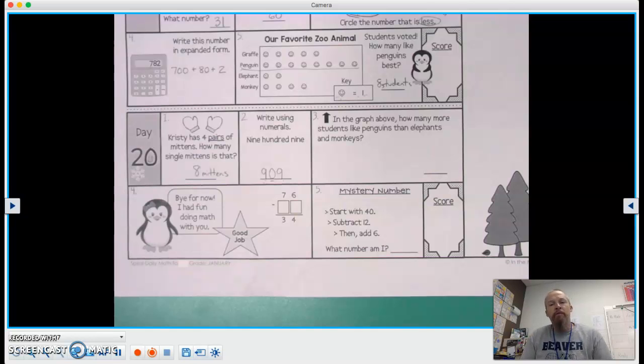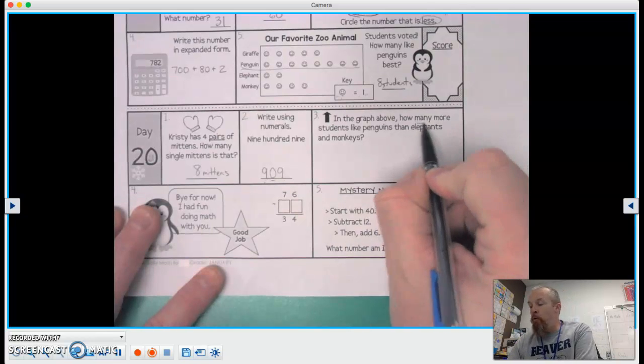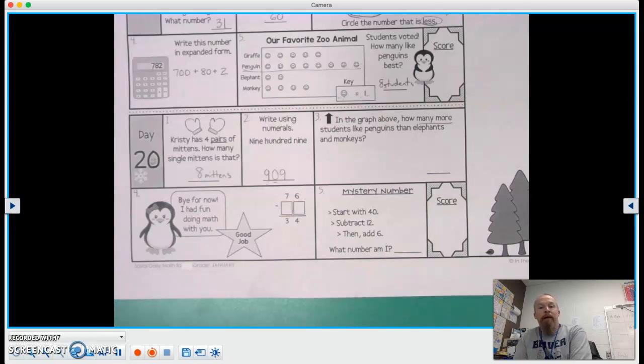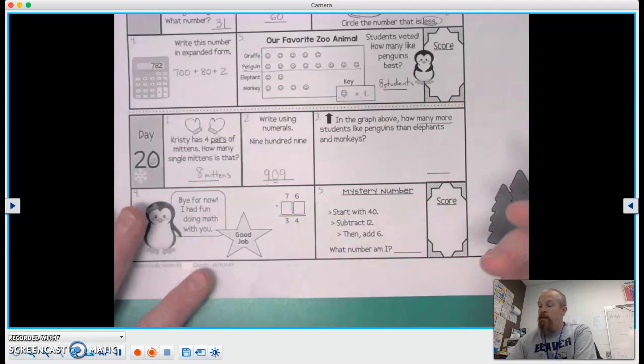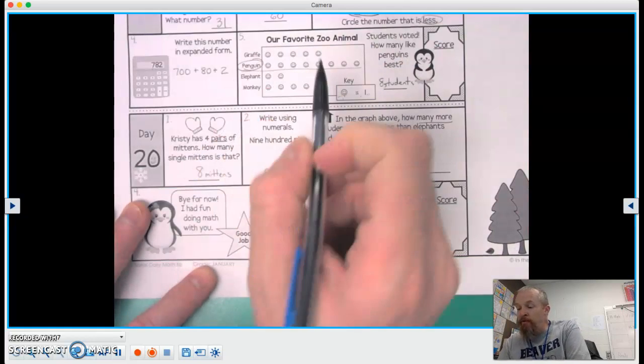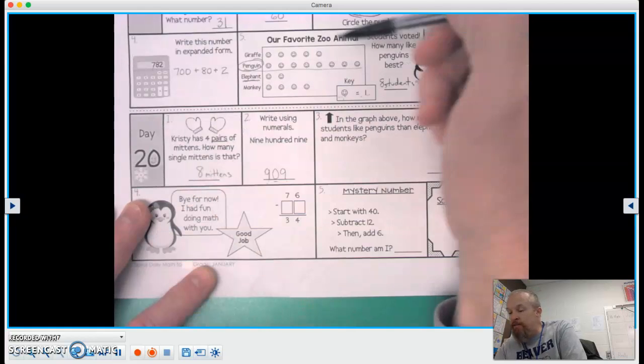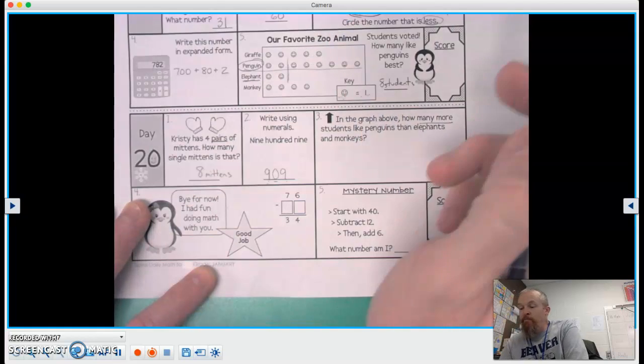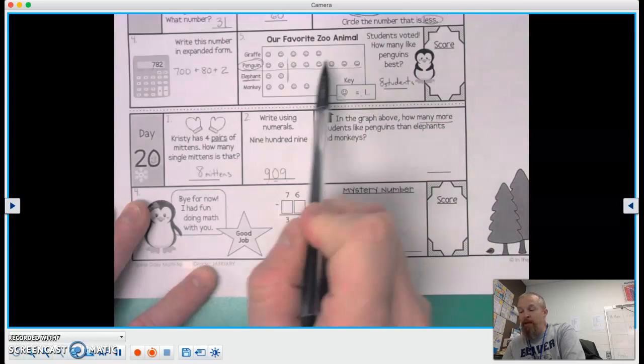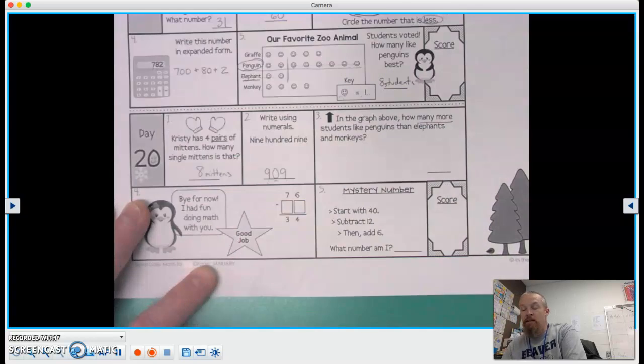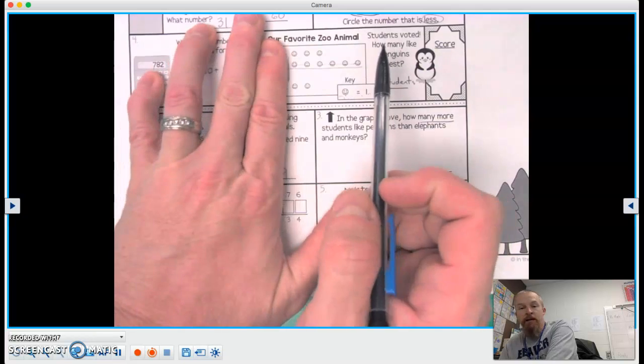Okay, number three says, in the graph above, how many more students like penguins than elephants? So again, we're going to compare the penguins. This time, it's going to go with the elephants. So how many more students like penguins than elephants? So these two are equal. I can cover those up.